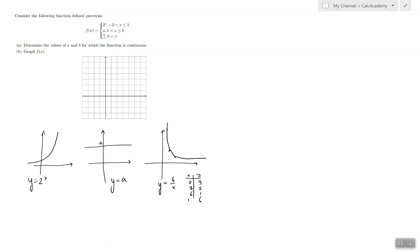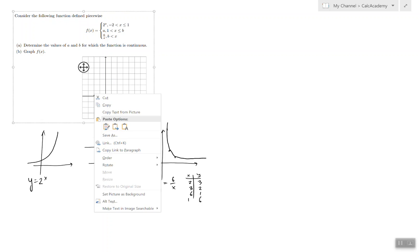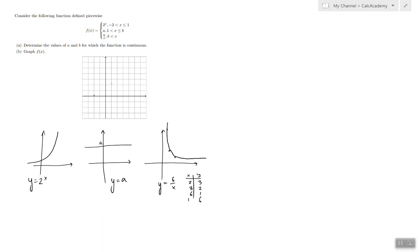So, the piece that doesn't have any parameters is the leftmost. So, from negative 2 to 1, we know the function for sure will look like 2 to the x. So, that means it's going to go from here to that one that's going to be equal to 2.